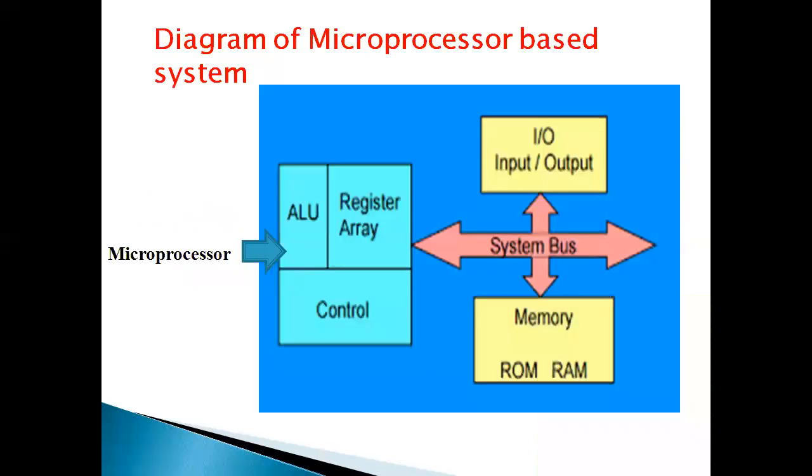This is the diagram of microprocessor based system. It is broadly divided into four parts: the first one is microprocessor, memory, system bus and I/O devices. The microprocessor is broadly divided into three parts that is ALU, register array and control unit.